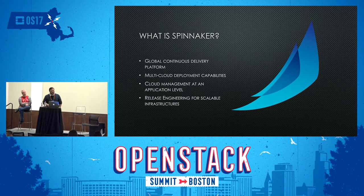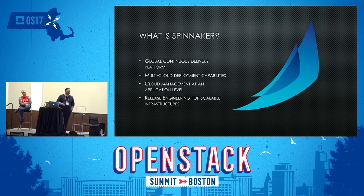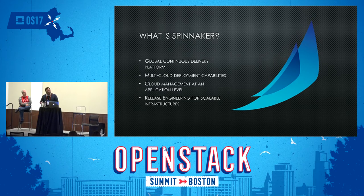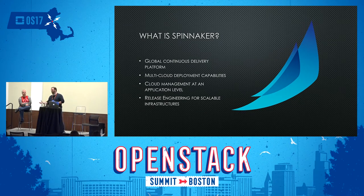We can effectively say this is a global continuous delivery platform. If you're an organization running in one or many clouds — whether a public cloud footprint like Amazon or Google, or data center cloud capabilities with OpenStack or Kubernetes — you can use the same tool, the same patterns, and pretty much the exact same pipelines to deploy your code across all those environments. This really opens the door for release engineering teams who own the underlying infrastructure but want to enable application development teams to get their software out much more quickly.